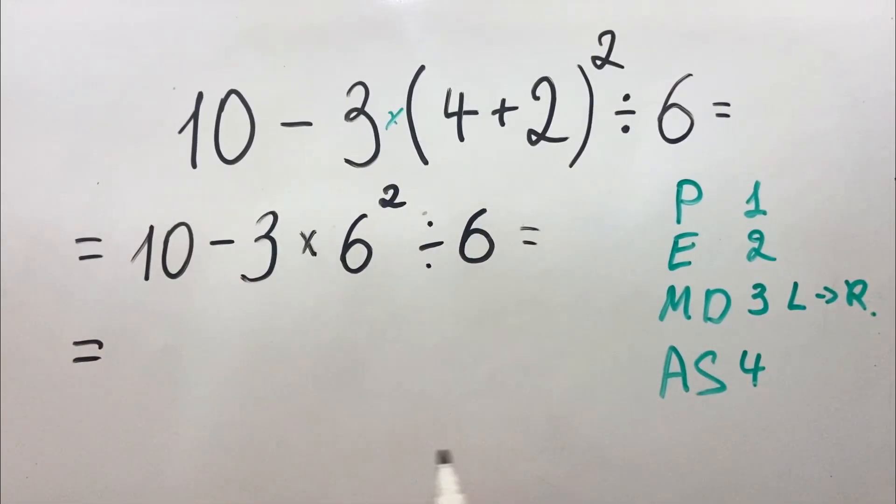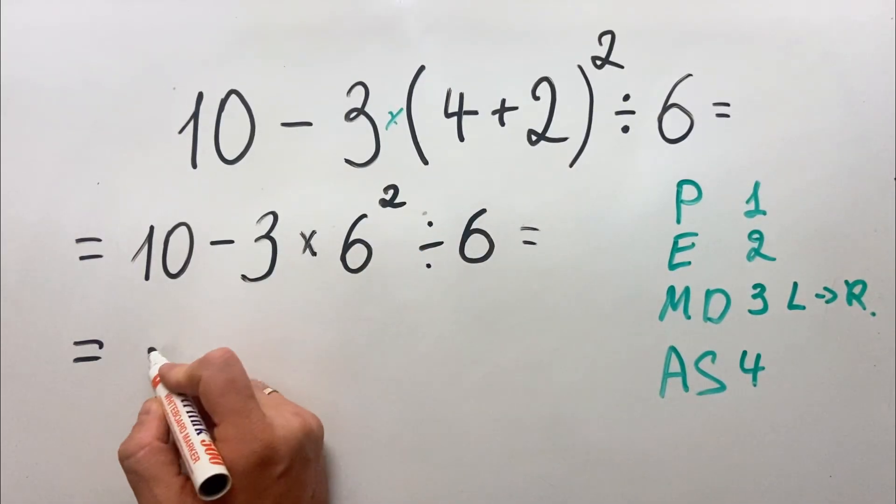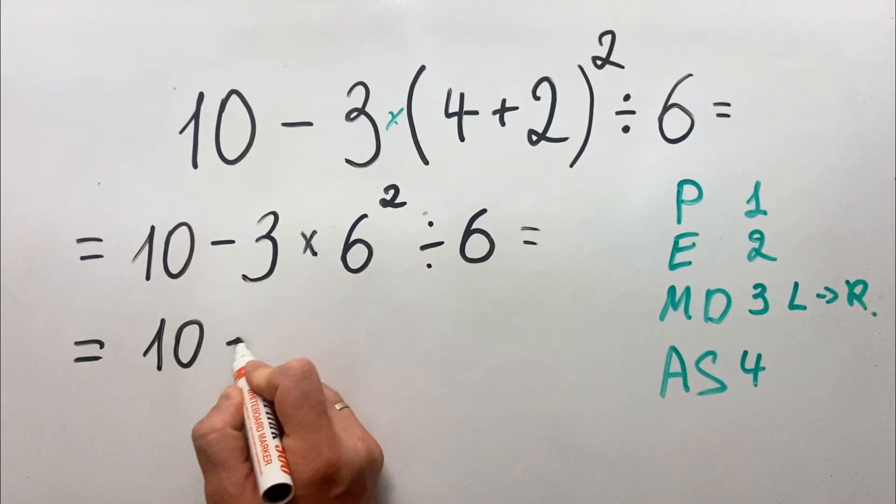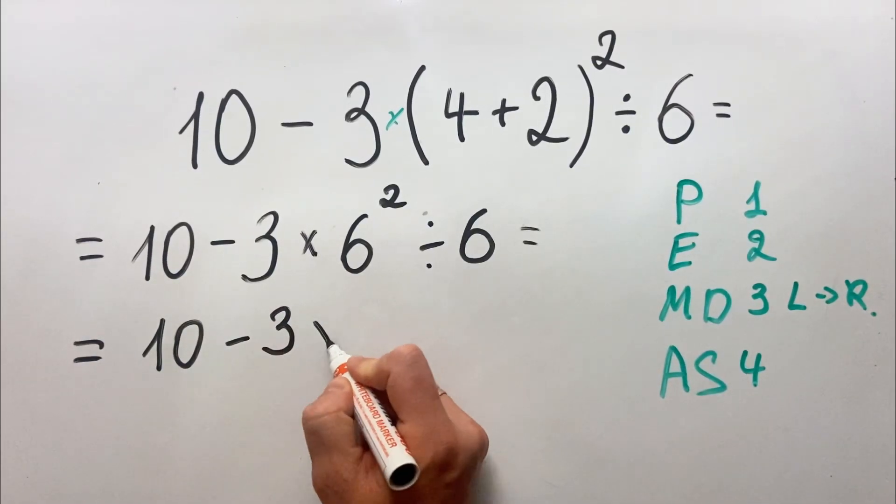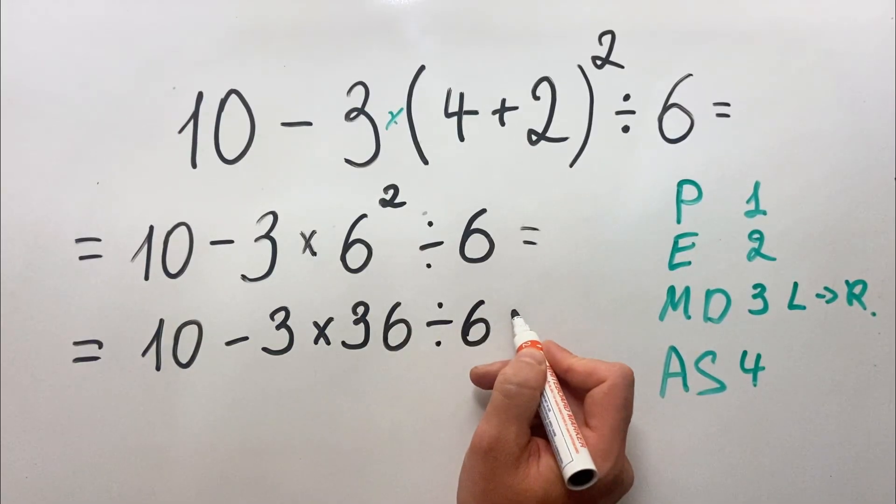Then we must do the exponents. Here we have the exponent, which is 6 squared. So basically we have 10 minus 3 multiplied by 36 divided by 6.